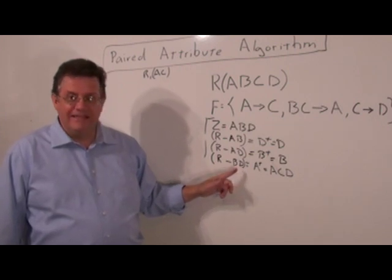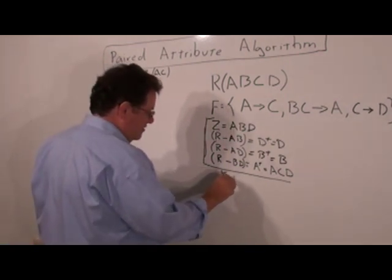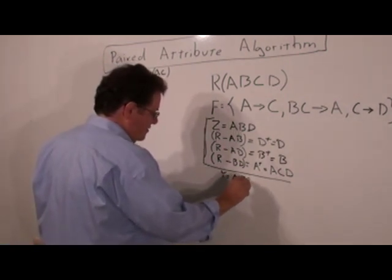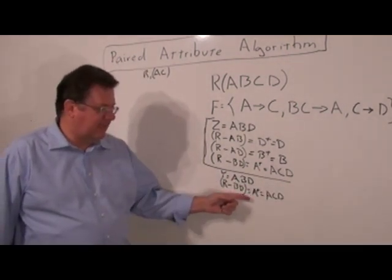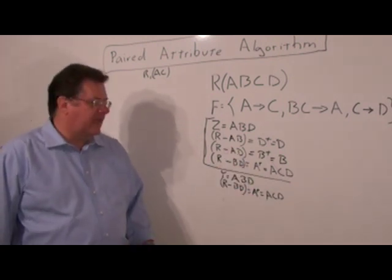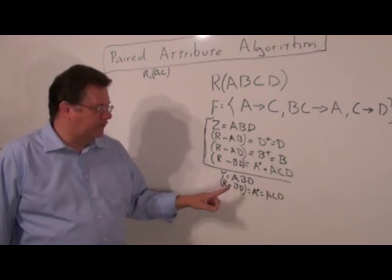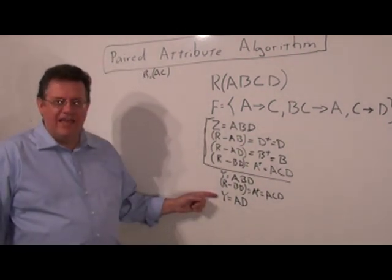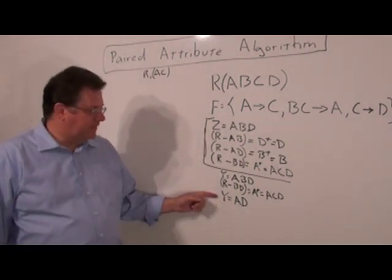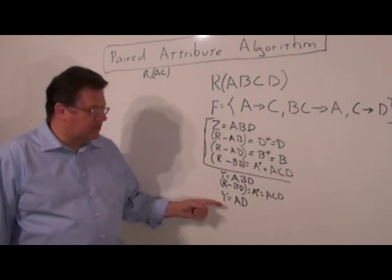So we need to call the decompose routine. Y gets all of the attributes of Z. And now we do R minus BD. The result is A, A closure is ACD, just like before. Since it includes the D, we remove the B. So we now have Y equals AD, and we're down to a pair. We can't reduce it anymore. This is in Boyce-Codd normal form. So we return this pair.